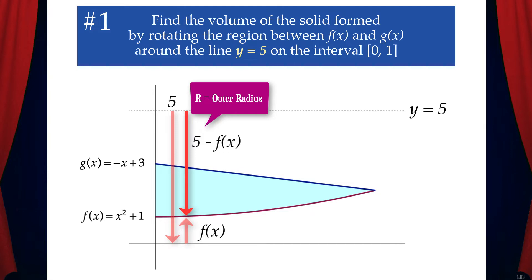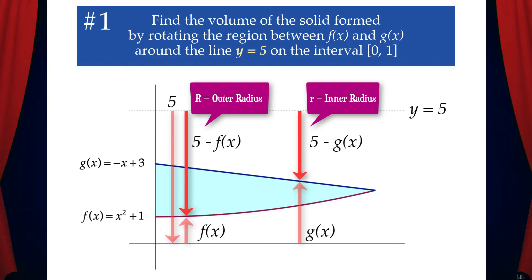In the same way, we'll determine the inner radius, little r, and that would be 5 minus g of x. Note that the outer radius is the distance to the curve that's farthest from the axis of rotation, and the inner radius is the distance to the curve that's closest to the axis of rotation.